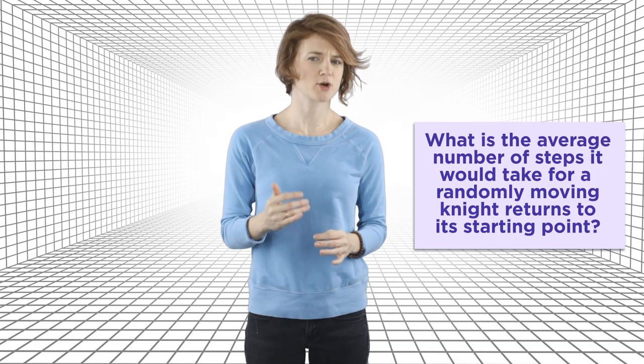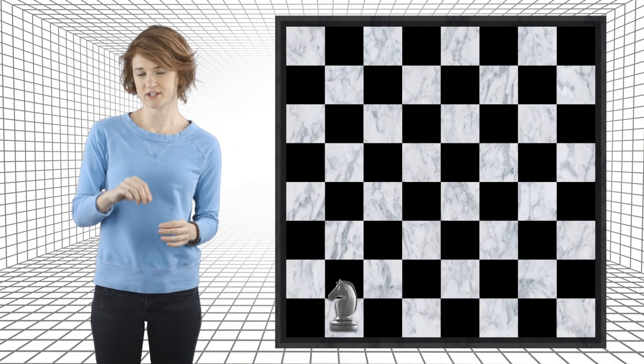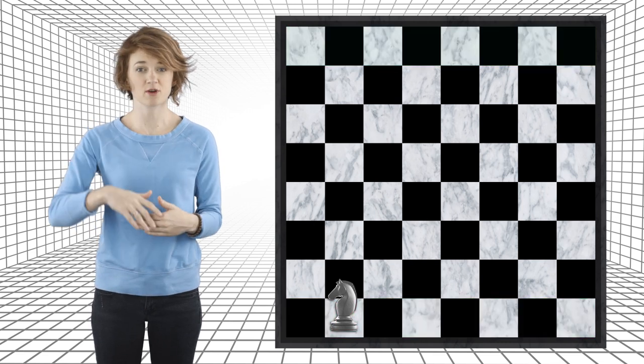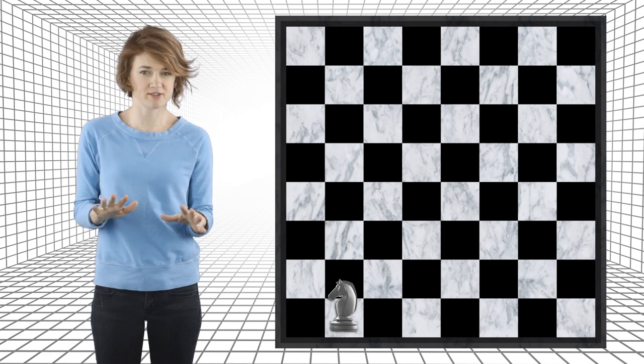Let's make the problem more precise. Put a knight in its usual starting spot on the board. It doesn't matter if you choose the first row or the last row or the second to left or the second to right. They're all symmetric.